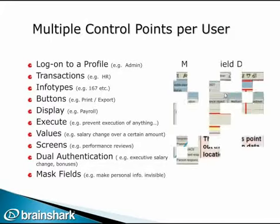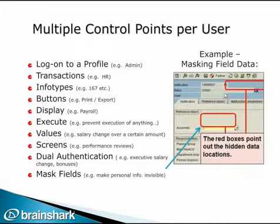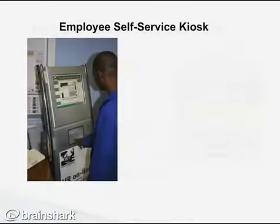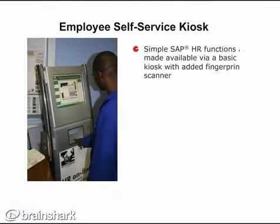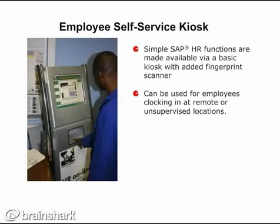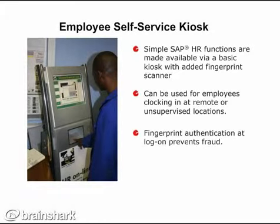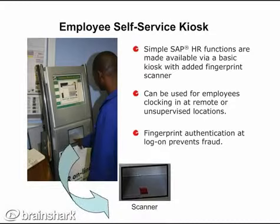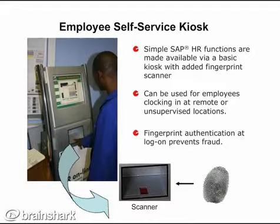Here are more examples of actions that can be controlled using BioLock. Maybe you want to prevent someone from printing a list of employees or salaries, or prevent a user from making salary or benefit changes. In the screen example, certain fields are masked, meaning the data is made invisible so that an unauthorized user cannot view them — for example, executive payroll. Here we see the employee self-service kiosk, which has been upgraded with a fingerprint scanner. Remote employees can use this kiosk to clock in with a secure audit trail, with no excuses like having forgotten a swipe card or lost a token.